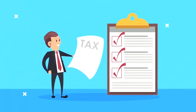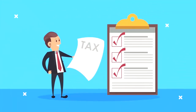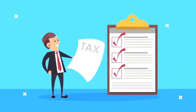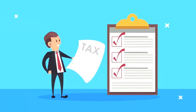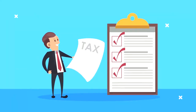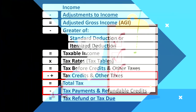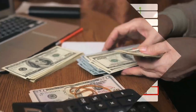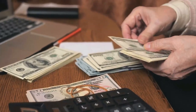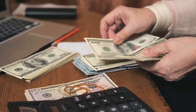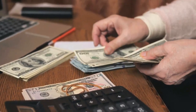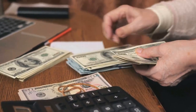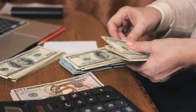Then we deal with the credits and other taxes, like the self-employment tax, and we deal with the payments in the form of estimated tax payments or withholdings, finally getting to the tax refund or tax due.